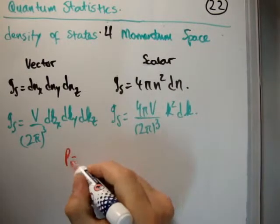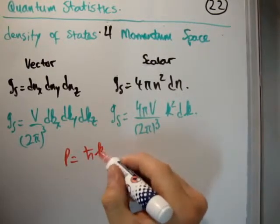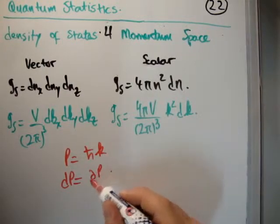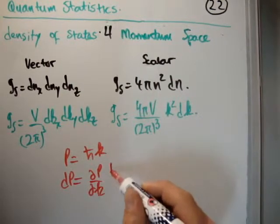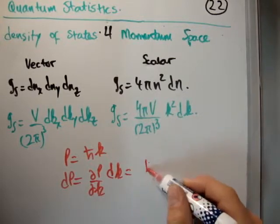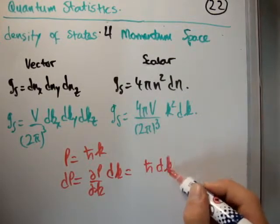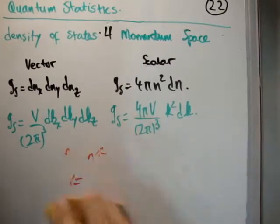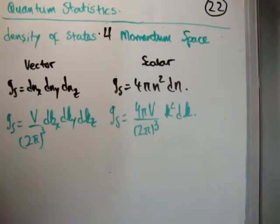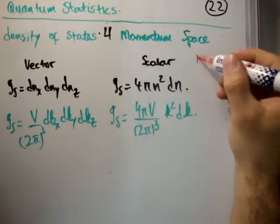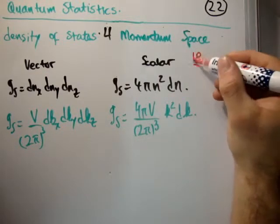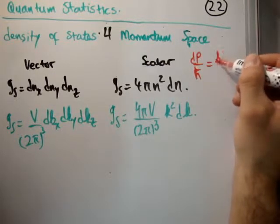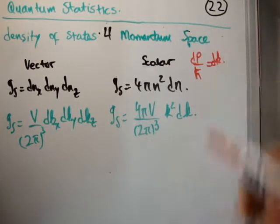So p is equal to ℏk. That means dp is only a function of k. Del p del k times dk is equal to ℏdk. Alright, so let's plug that expression into our density of states and see what happens. So it's going to note it up here that p, dp over ℏ is equal to k. Like that.